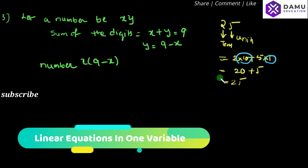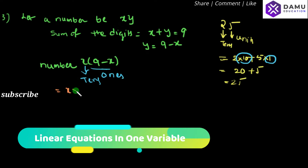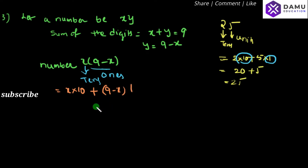So here, 10 is coming for the second place and 1 is coming for the ones place. Applying this expanded form to our number: x is the tens place and (9 minus x) is the ones place. So the expanded form is x into 10 plus (9 minus x) into 1, which gives us 10x plus 9 minus x.